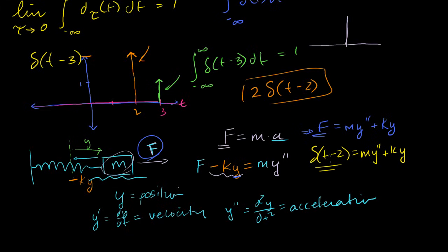If this outside force is a Dirac delta function — say delta of t minus 2 equals m times y double prime plus k times y — this says that at time equals 2 seconds, we just jar this mass to the right with an impulse of magnitude 1 (changing its momentum by 1, depending on units). This is the idea of jarring it infinitely fast but with enough force to change the momentum in a well-defined way.